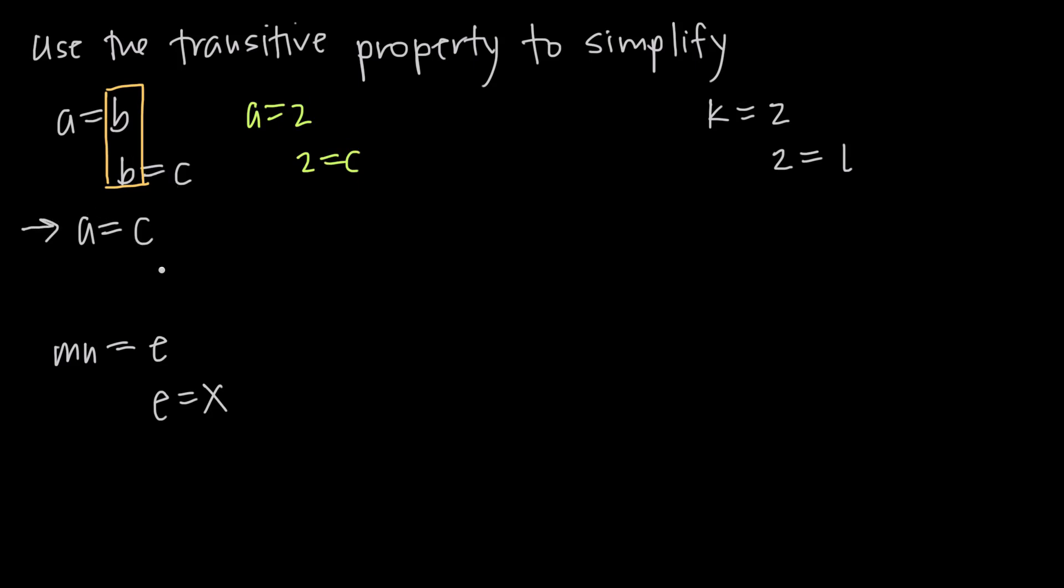We can do this with more complicated variables also. If we know that MN is equal to E and that E is equal to X, then we know that MN is equal to X.